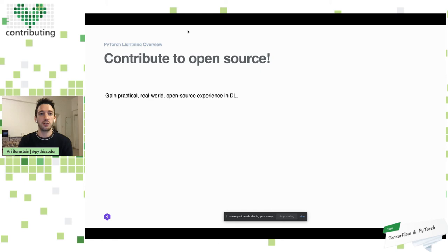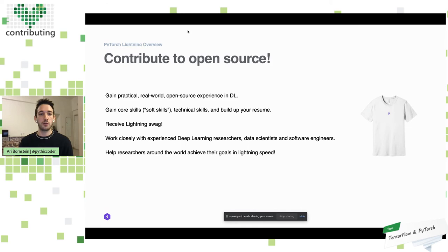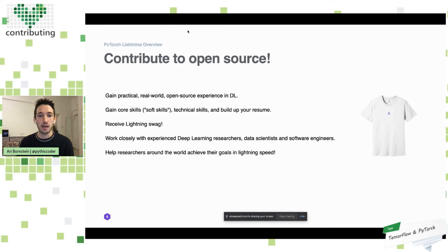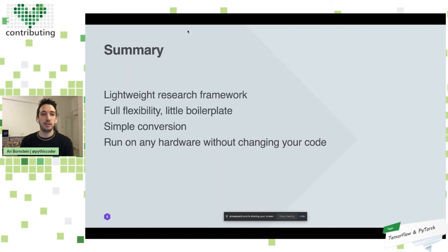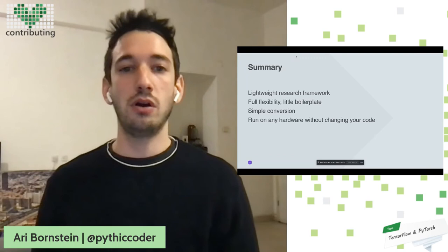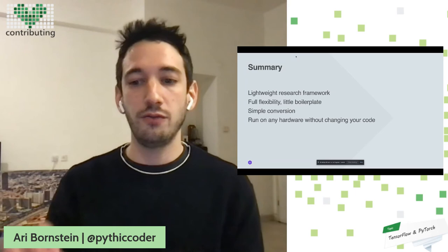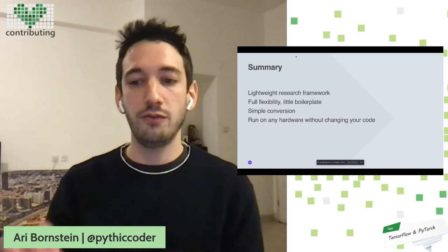Number one: contribute to open source — it's really awesome. There's a how-to-contribute guide in our repo and docs, and I'd be happy to work with you. We'll make sure you get some cool Lightning swag. To summarize: PyTorch Lightning provides a lightweight research framework with full flexibility, significantly reduces boilerplate, and enables you to run your code on any hardware without modifying individual calls within your scripts. With that, I'll open it up to questions.